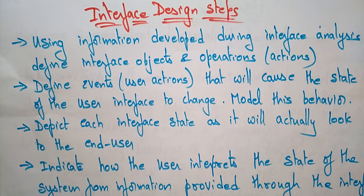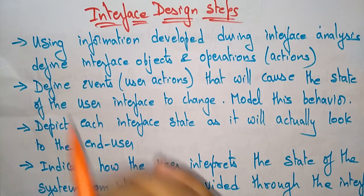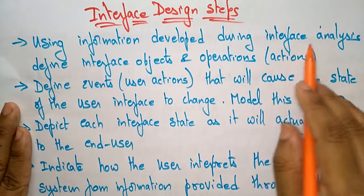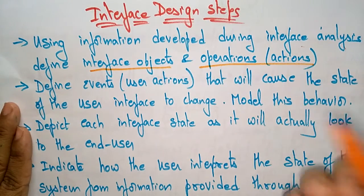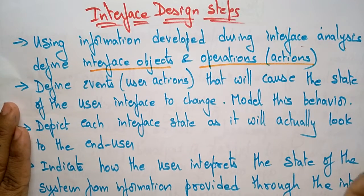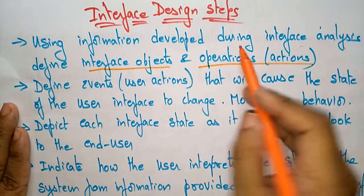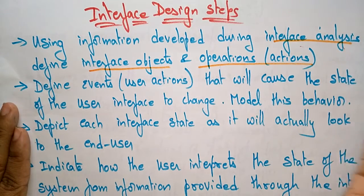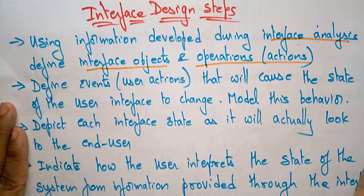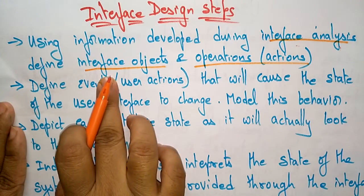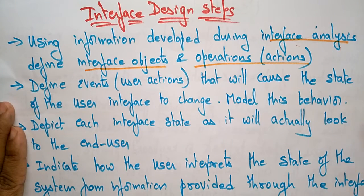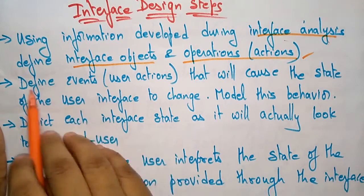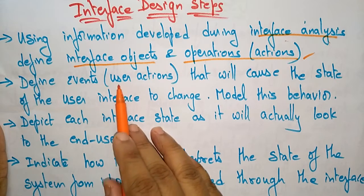The first step in interface design: using information developed during interface analysis, you have to define interface objects and operations. By using the information gathered during interface analysis, we define what are the objects and what operations have to be performed.